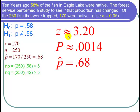So we had z is about 3.20, our P value was about 0.0014, and P hat was equal to 0.68.